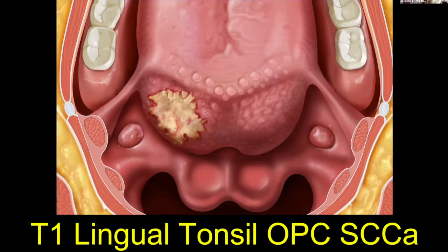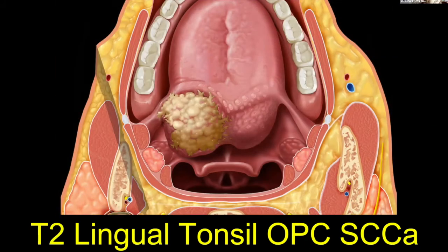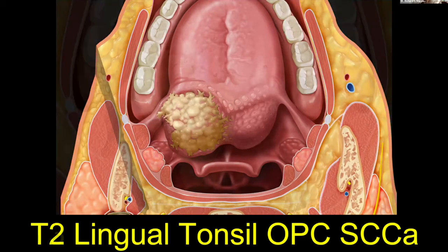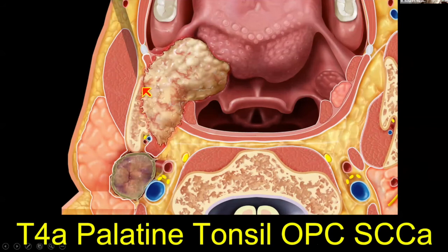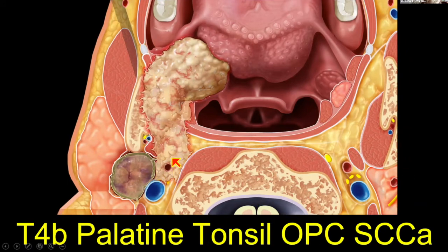For staging, I'll measure in whatever dimension the tumor is biggest. For the oral cavity and oropharynx, remember the numbers two and four: less than 2 cm is T1, between 2 and 4 cm is T2, greater than 4 cm is T3. If it's invading down into the preepiglottic fat or anteriorly into the tongue past the circumvallate papillae, that's still T3 or T4A. If it's invading the mandible or pterygoid muscles, that's automatically T4A. If it's wrapping around the carotid or invading the prevertebral fascia, that's automatically T4B — the highest stage.